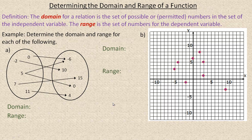In this video, we'll take a look at determining the domain and range of a function. The domain for a relation is a set of possible or permitted numbers in the set of the independent variable. The range is a set of numbers for the dependent variable. Domain is the independent variable, often x but not always, and the range is the set of variables that y is defined for — often y — which is the dependent variable.